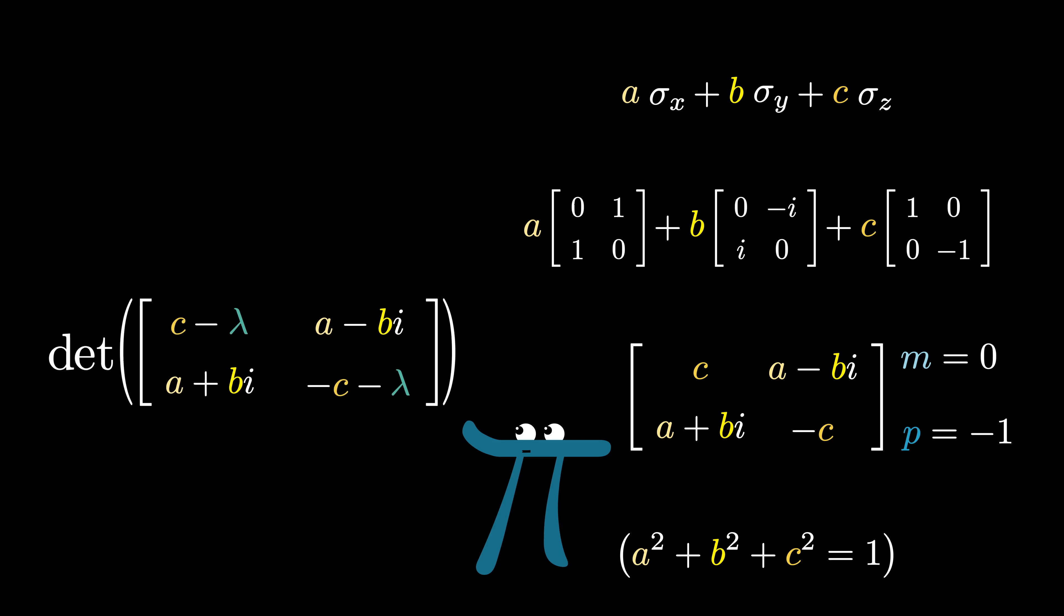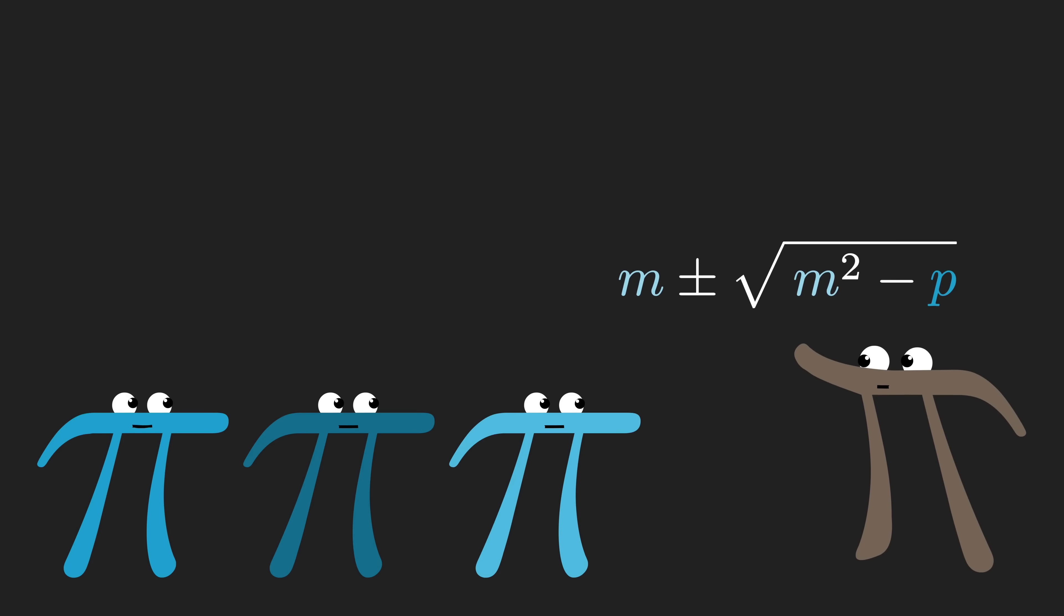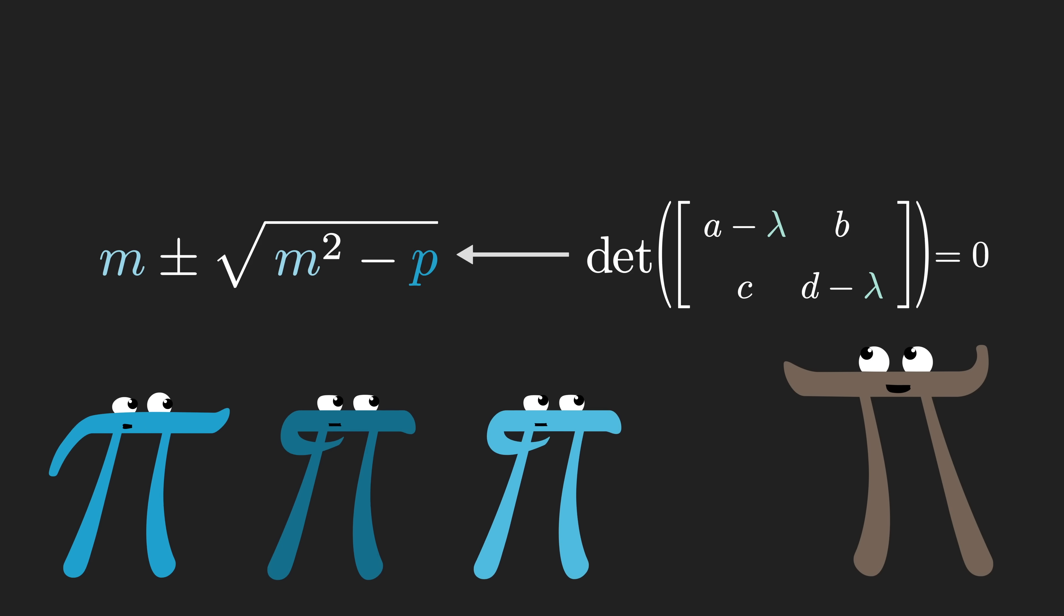And this time, the characteristic polynomial approach would be by comparison a lot more cumbersome, definitely harder to do in your head. To be clear, using the mean product formula is not fundamentally different from finding roots of the characteristic polynomial. I mean, it can't be, they're solving the same problem.